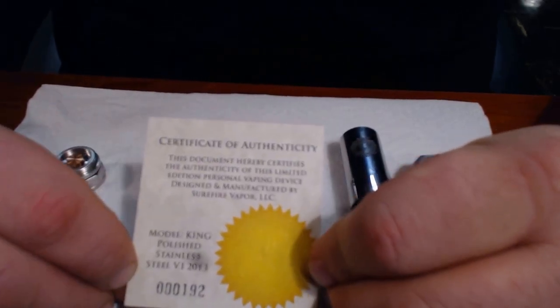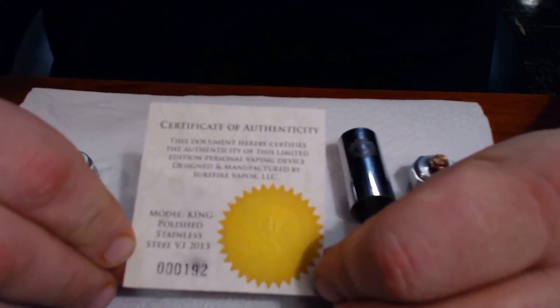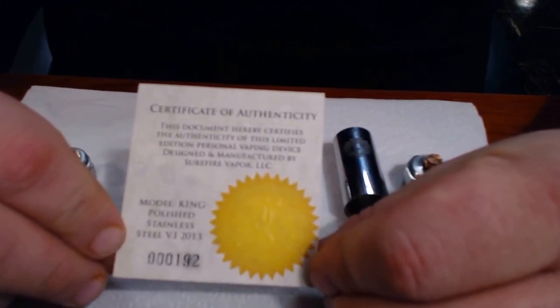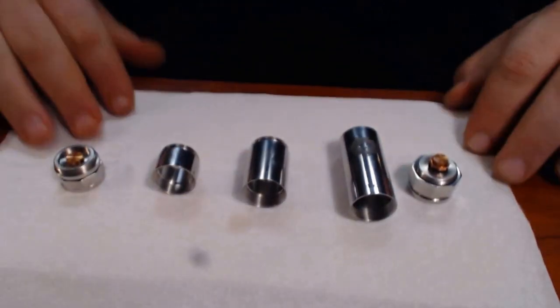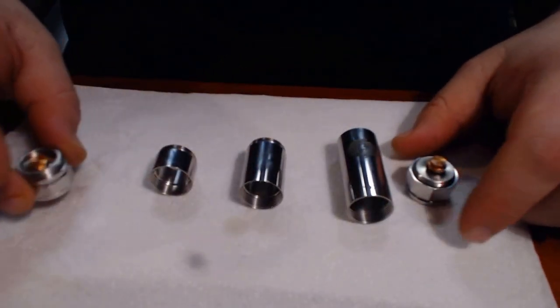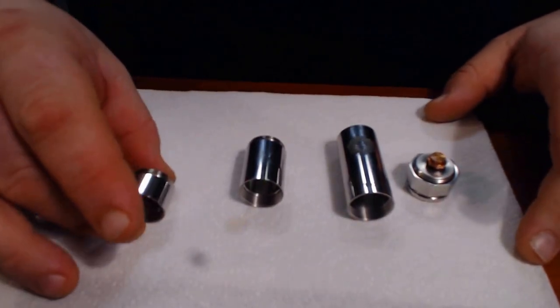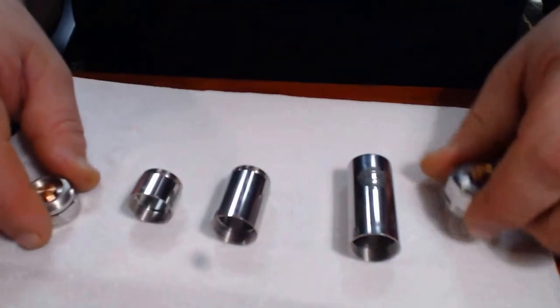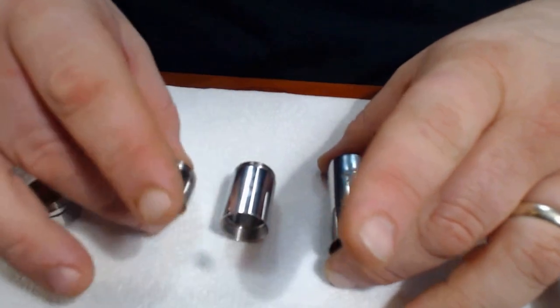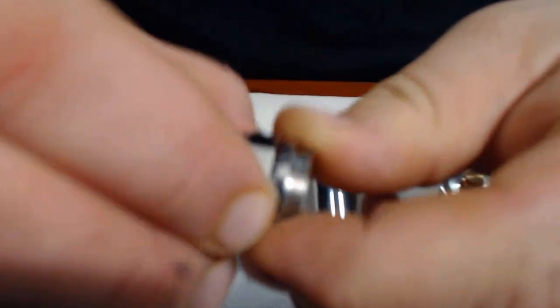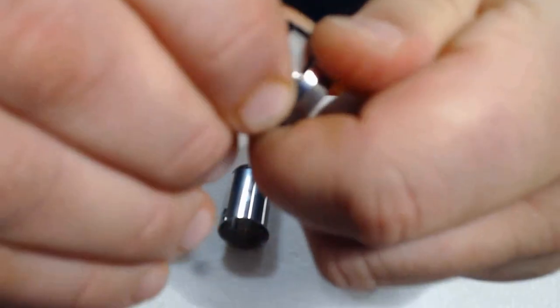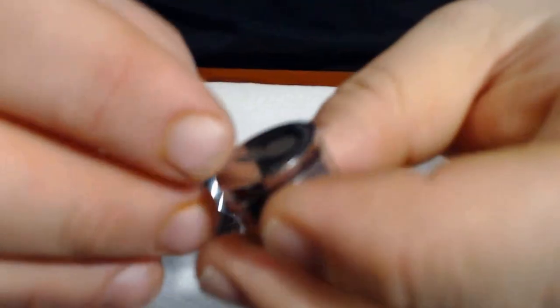Taking a closer look underneath, first off each mod comes with its own certificate of authenticity. Breaking the mod apart, it comes into five pieces. You have a top and bottom and then three segmented tubes. We'll start with the firing pin, it's in lock mode so we'll unlock it.